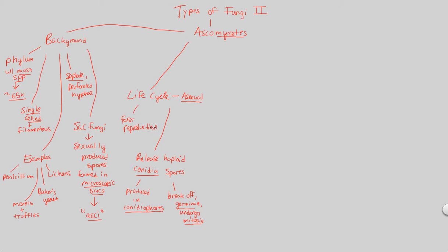But what if the environment is unstable? What if you need variation? Then you switch not to an asexual reproduction life cycle, but you do sexual reproduction. They also have the ability to undergo a life cycle change, and that life cycle change would be towards this type of new reproduction known as sexual reproduction.